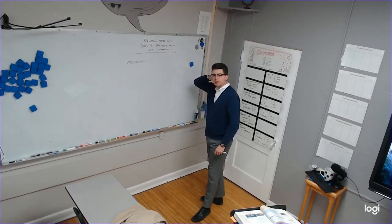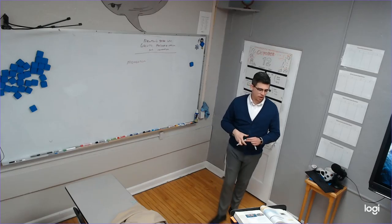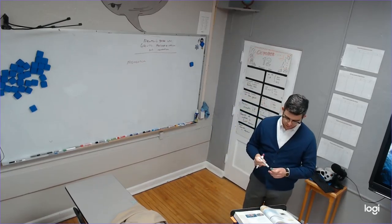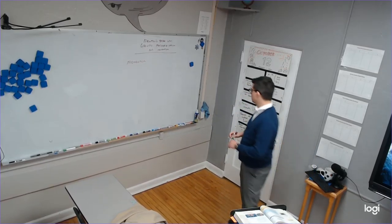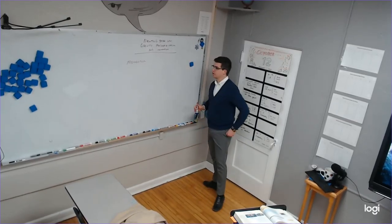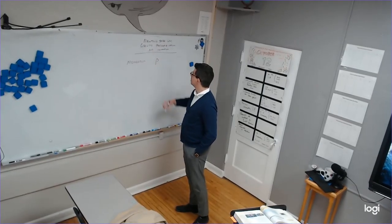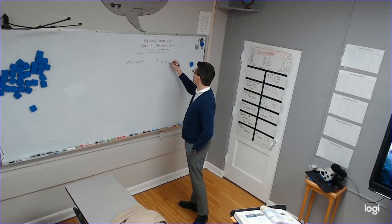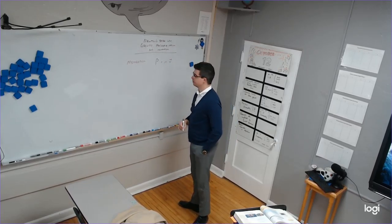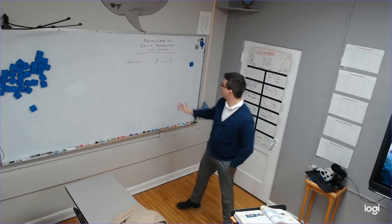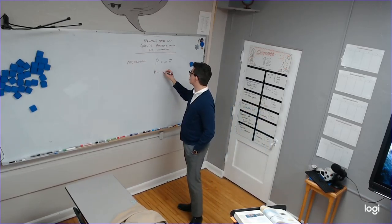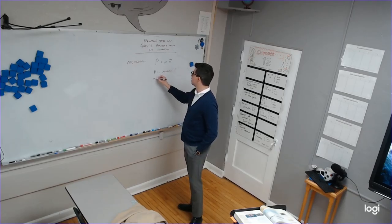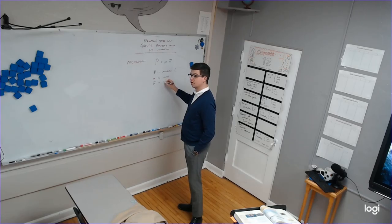I'm going to define momentum. Well, first of all, let's think about, your book has an equation for momentum. P, lowercase p is momentum, equals mv. P is momentum. We're going to talk about what it's measured in a second. M is mass. V is velocity. Velocity.